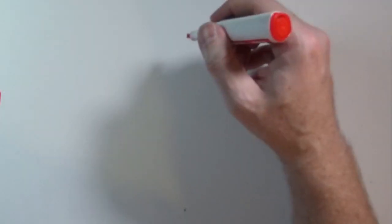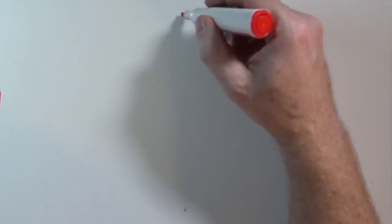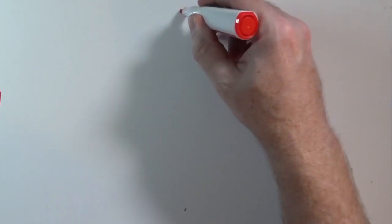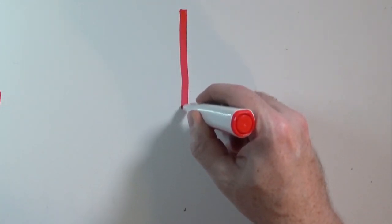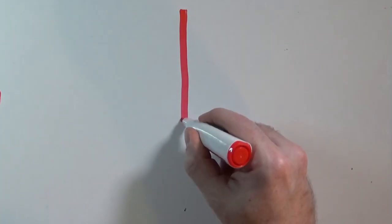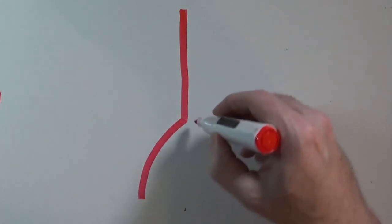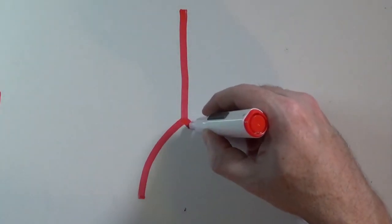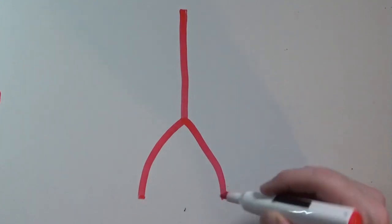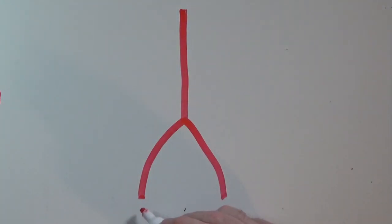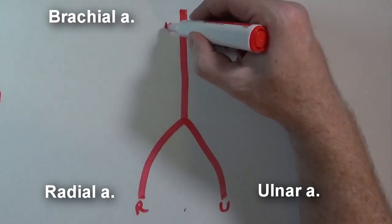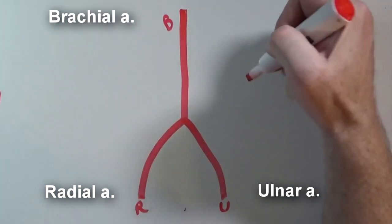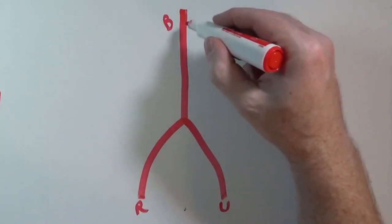After the axillary artery passes the lower border of the teres major, the name changes to the brachial artery. The brachial artery branches into the radial artery and the ulnar artery. This is the radial artery, this is the ulnar artery, and the brachial artery is up here.